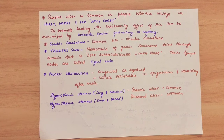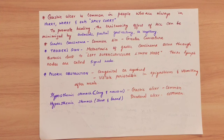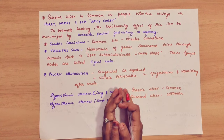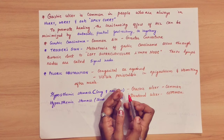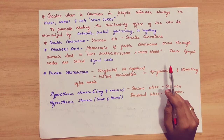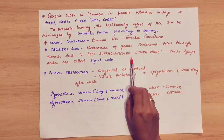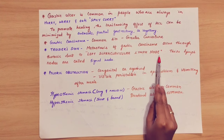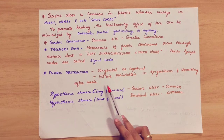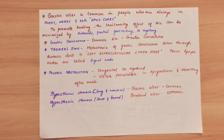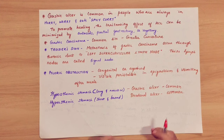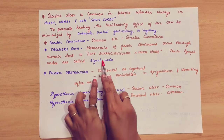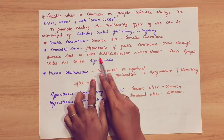Gastric carcinoma is stomach cancer, which commonly affects the greater curvature. Troisier sign: in gastric cancer, the lymphatic drainage goes through the thoracic duct to the left supraclavicular lymph node. In stomach cancer patients, you can see a bulge — a lymph node — on the left supraclavicular region. This is called the Troisier sign, and this lymph node is also known as the signal node.